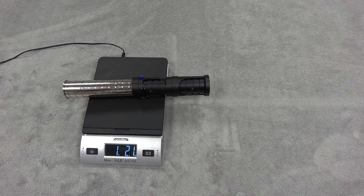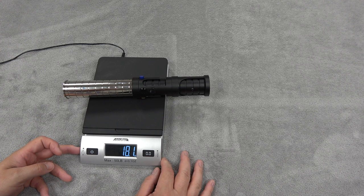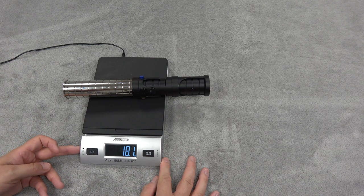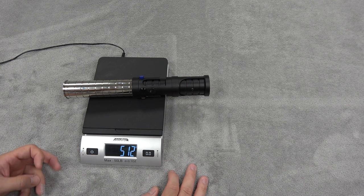Without a blade, we're looking at one pound, 2.1 ounces, which is 18.1 ounces or 512 grams.